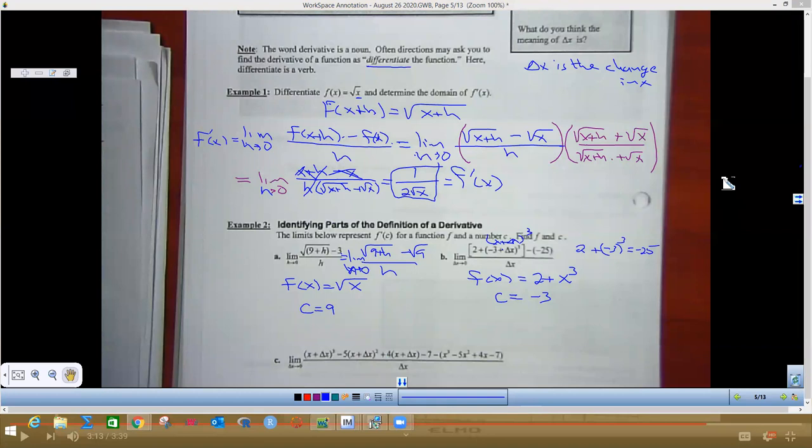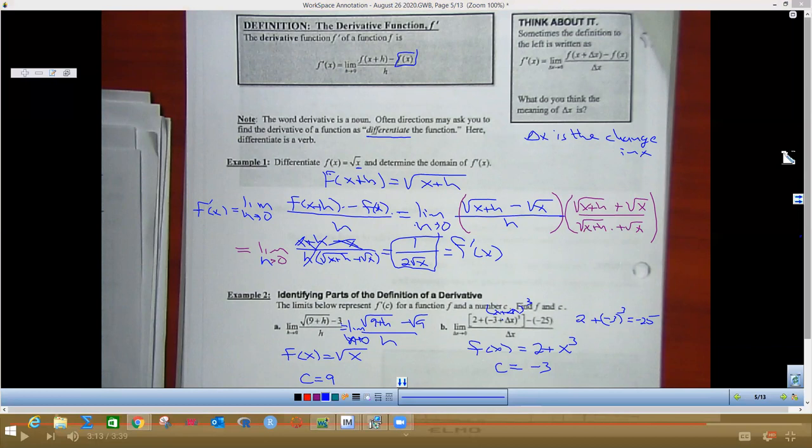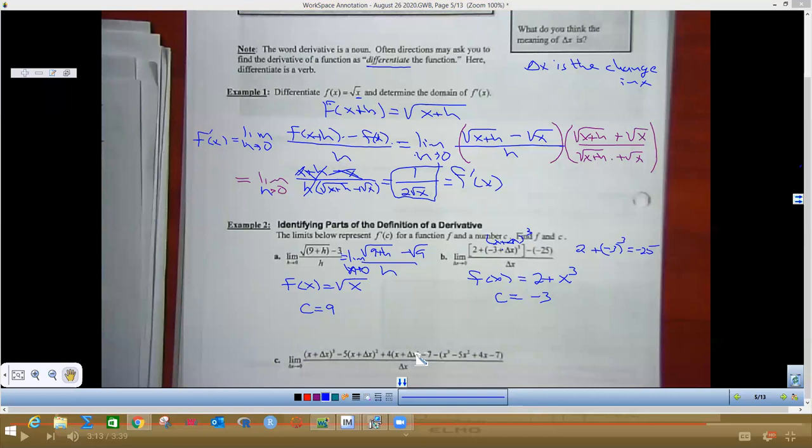This is kind of in this form up here because they are using all of this stuff right here. If you look at the coefficient of this cube part, it's a 1 just like this coefficient is a 1. That coefficient is negative 5 like that, negative 5. And this coefficient is 4 like that. And the constant is negative 7, negative 7. So if you look up there at that one, I just had this thing right here. That thing right there is your f of x part right there. That is your f of x.